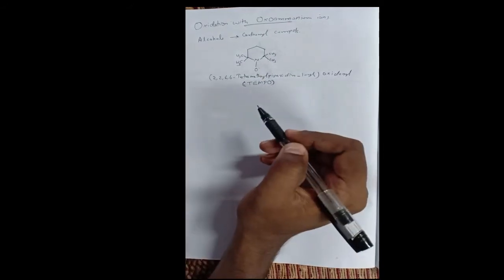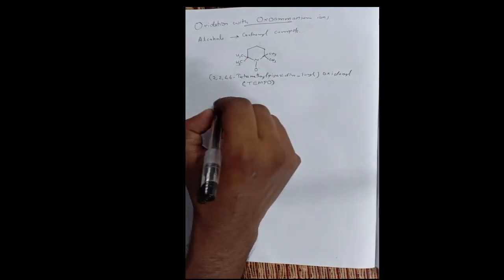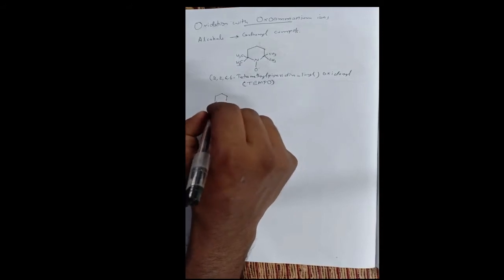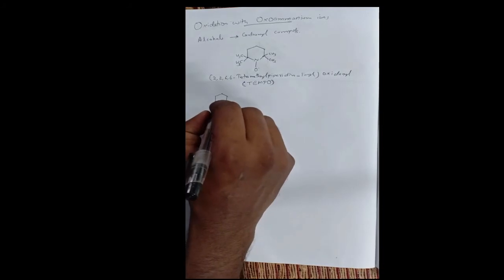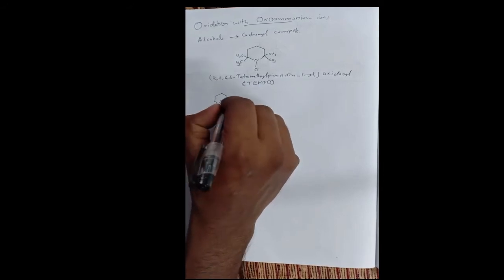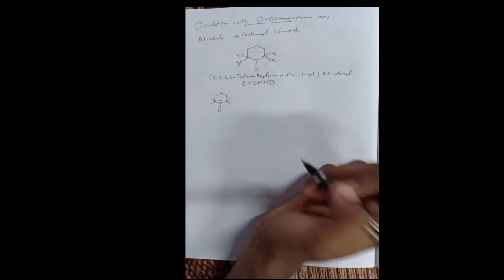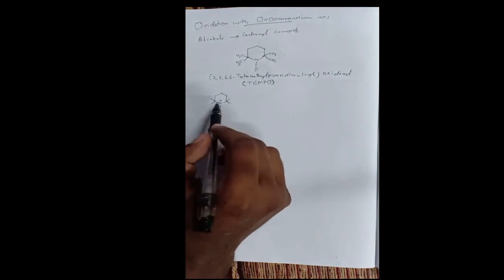The actual oxidant in this reaction is an amino oxide radical, specifically a nitroxide. This forms the oxo ammonium ion, which is a stable compound. This oxo ammonium ion is the actual oxidant that oxidizes alcohols to carbonyl compounds.